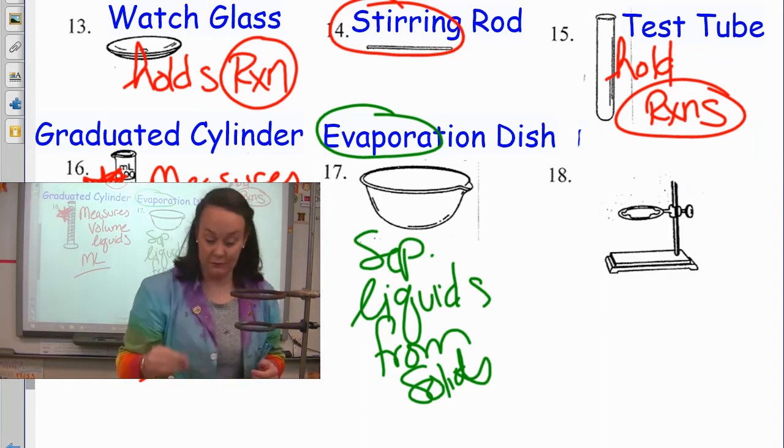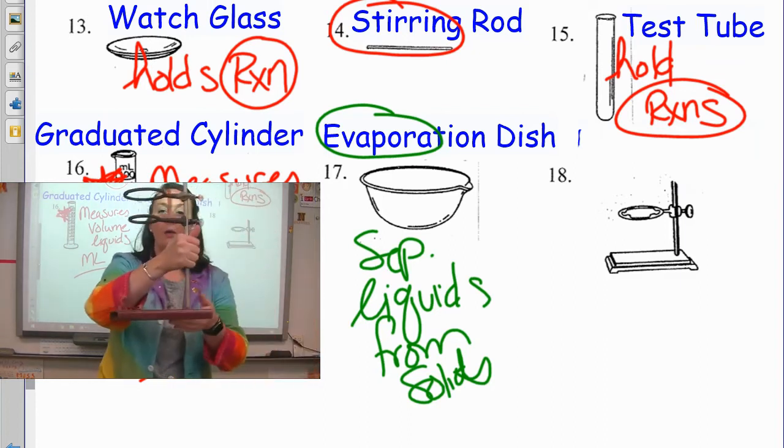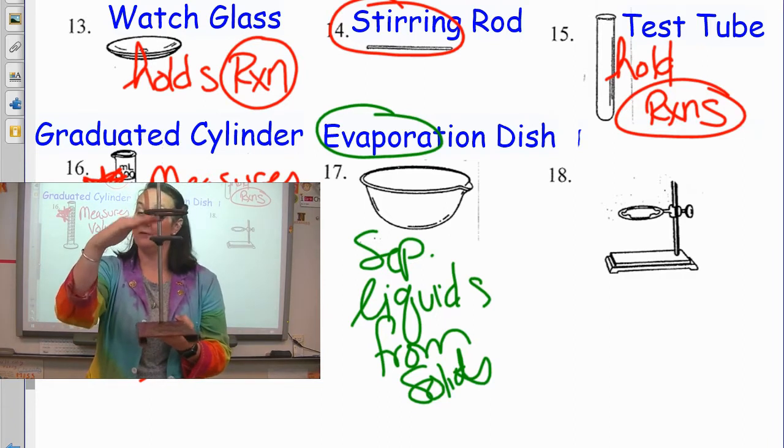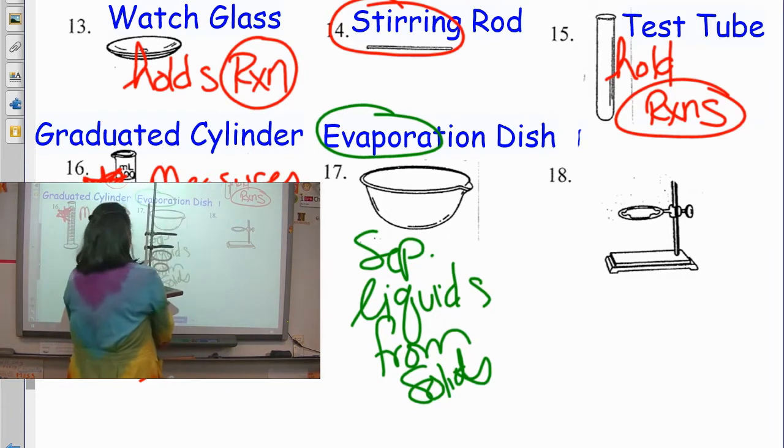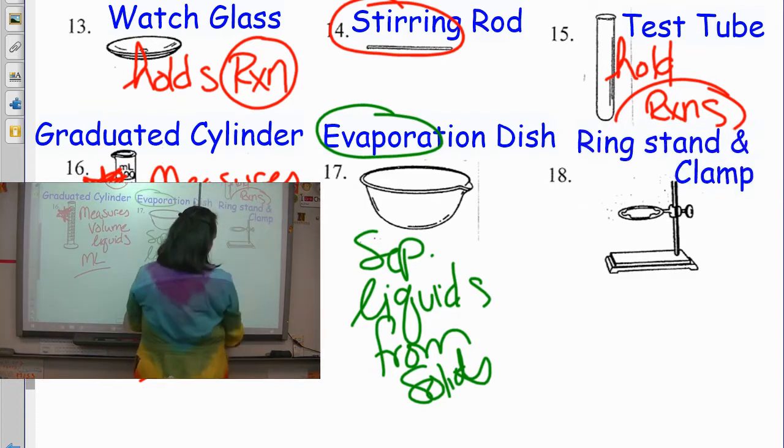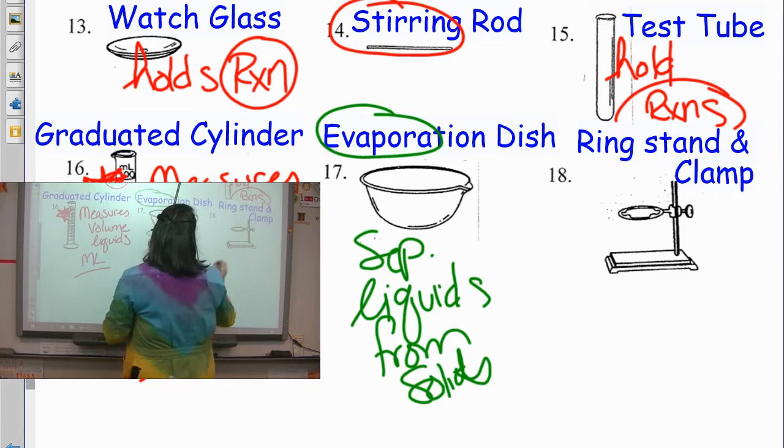Number 18 is something I've been referring to. Probably a little out of order here. But this is called a ring stand and a set of clamps. So, ring stand and clamp. And let's just, while you're here, write holds for heating.